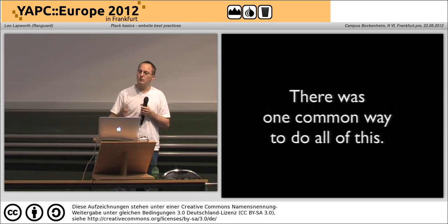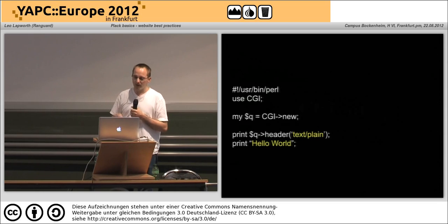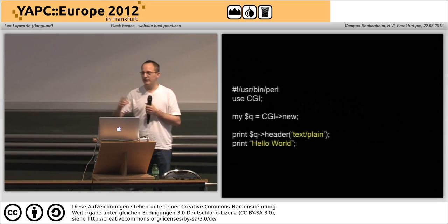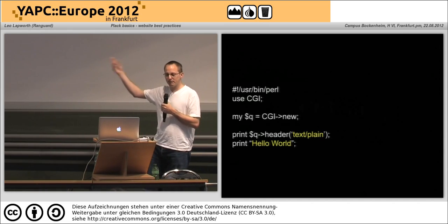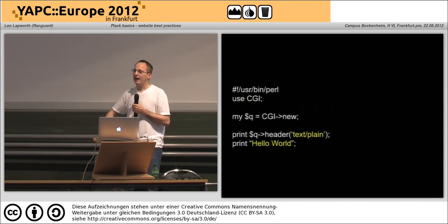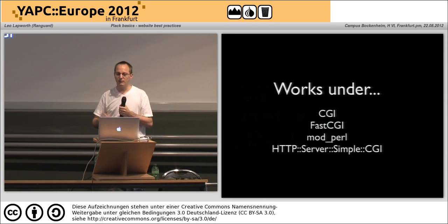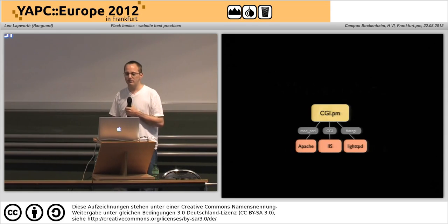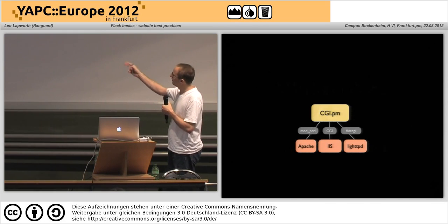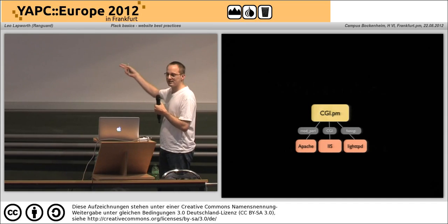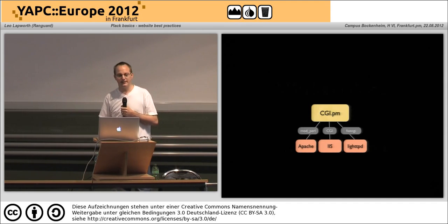There was one common way of doing this and that was CGI.pm. What you used to do was use CGI, print your header, print hello world, and suddenly everything just worked — it worked under CGI, FastCGI, mod_perl, and a lot of other web servers. So CGI.pm could talk to mod_perl, run CGI under IIS, or run on FastCGI for something like lighttpd.